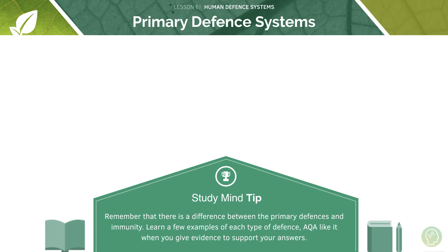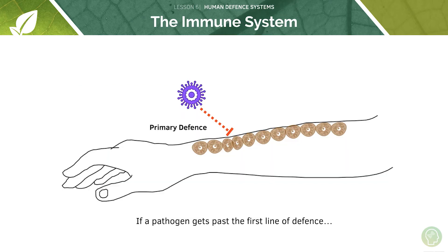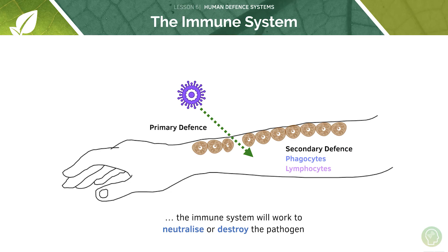Remember that there is a difference between the primary defences we just listed and immunity. You should learn a few examples of each. We've given examples of primary defences: the skin, the airway passages and the stomach. Now we're going to move on to the role of the immune system, which comes into play when the pathogen gets past the first line of defence. If the pathogen breaches the skin layer, aspects of the immune system come into play — we refer to these as the secondary defence mechanisms: phagocytes and lymphocytes.